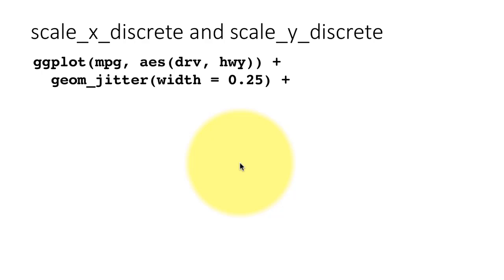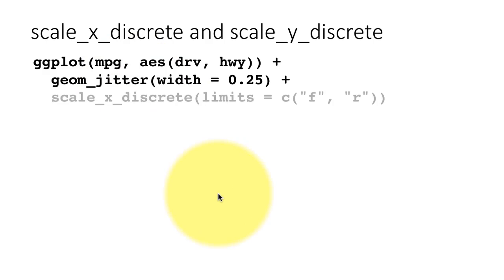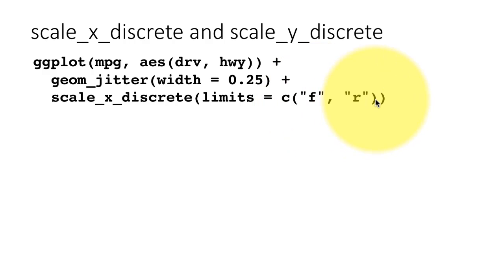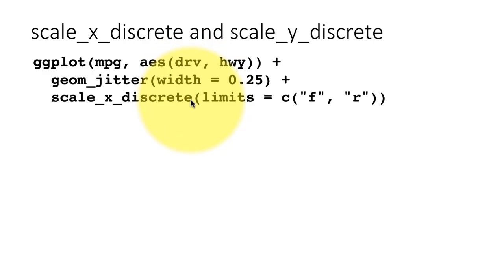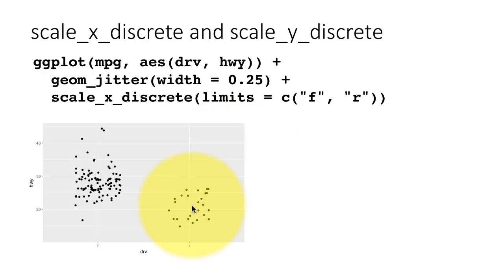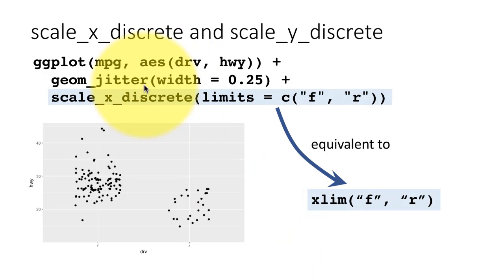Let's take an example. We are mapping the x-axis to drive and the y-axis to highway mileage. We've seen this plot before — we are jittering the plot and saying we want scale_x_discrete with limits equal to c('f','r'). We are telling the system we want to see x-axis values only for the front-wheel-drive and rear-wheel-drive cars. So far, this is not any different from using the xlim function; scale_x_discrete with limits is the same as xlim('f','r').